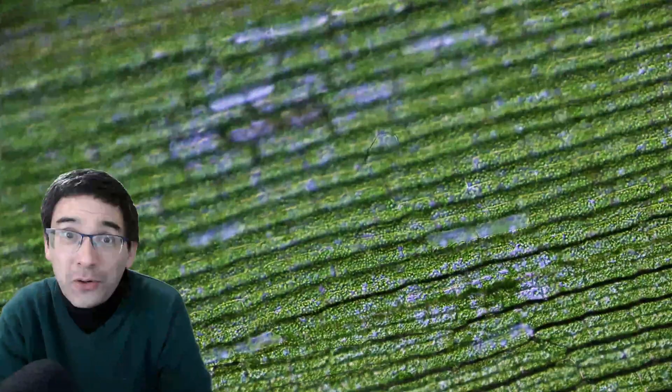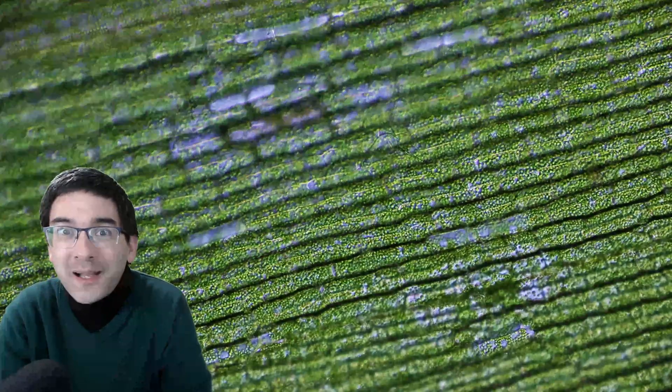These are cell organelles that do photosynthesis, and they are green. Plants are green because the chloroplasts are green. Inside the chloroplasts, there is a green pigment called chlorophyll. Under time-lapse, you can see that those chloroplasts move around quite a bit inside the cell.